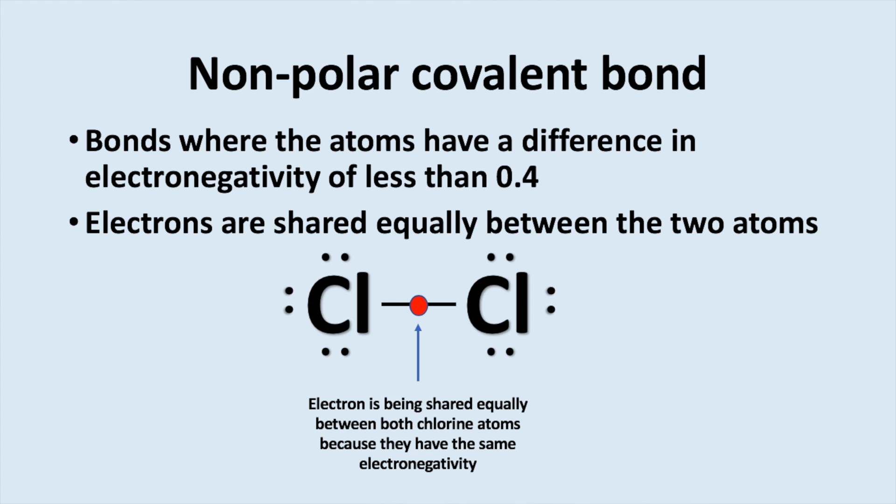Differences in electronegativity are very important when it comes to chemical bonding and what types of bonds are formed. In bonds where the atoms have a difference in electronegativity of less than 0.4, electrons are shared equally between the two atoms. This is known as a nonpolar covalent bond.